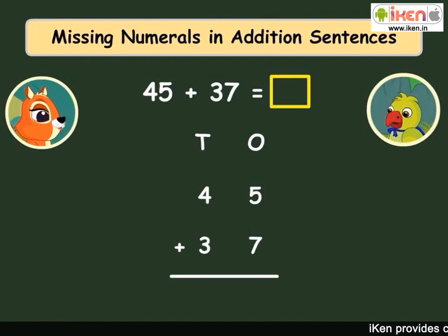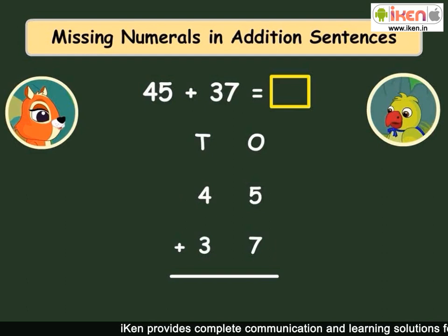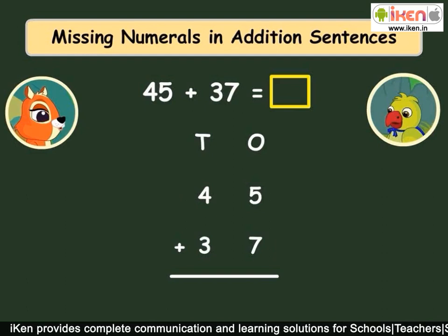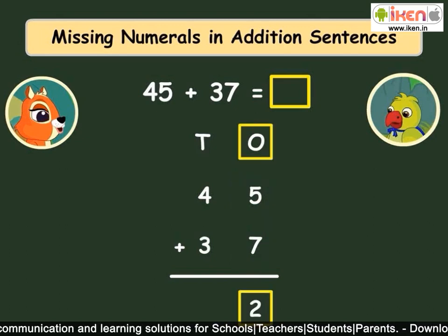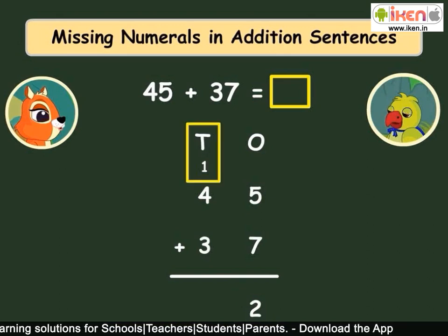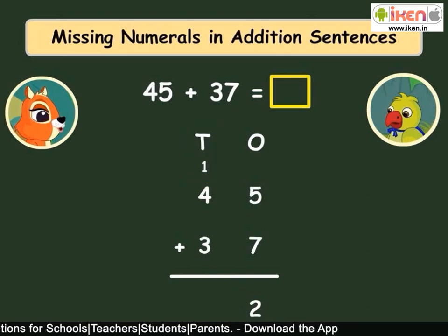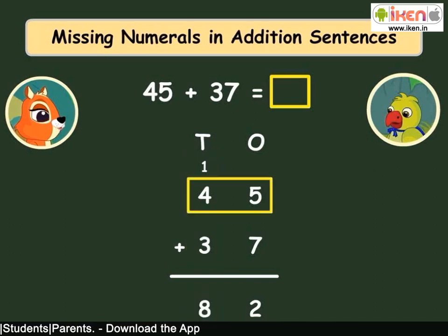Okay, find the missing number in this addition sentence. This is easy — I just have to find the sum of 45 and 37. I will write the numbers one below the other. Addition of the ones gives 12; I will write 2 in the ones place and carry over 1 to the tens place. Addition of the tens gives 8, so 45 plus 37 is 82.